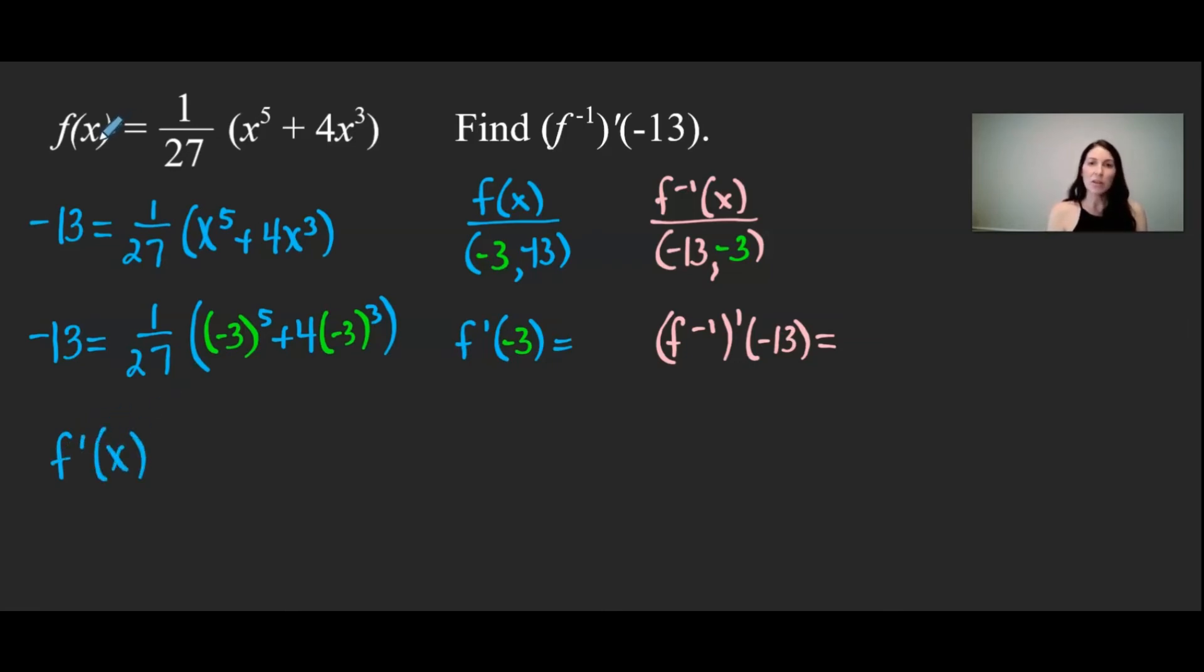And up here is my original function f of x. Here we have a constant multiple, 1 over 27. So I'm going to leave that constant multiple in the front. And then I'm going to take the derivative of x to the fifth, that gives me 5x to the fourth, plus the derivative of 4x cubed is 12x squared.